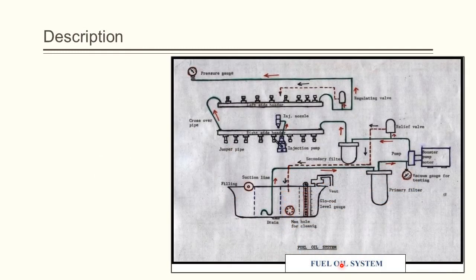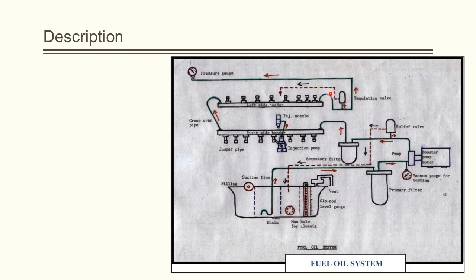The fuel booster pump or transfer pump is switched on and starts sucking oil from the fuel tank, which is filtered through the primary filter. Because of variable consumption by the engine, the delivery pressure of the pump may rise, increasing load on the pump and its drive motor. When the rate of consumption of fuel by the engine is low, the relief valve ensures safety of components by bypassing the excess pressure back to the tank. The oil then passes through the paper type secondary filter and proceeds to the right side of the fuel header, which is connected to the eight fuel injection pumps on the right bank of the engine.